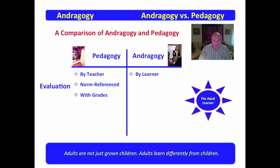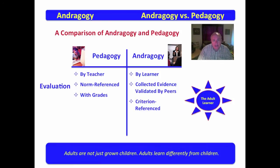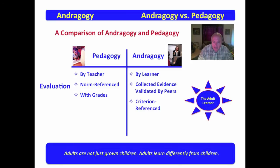In andragogy, evaluation is done by the learner, and it can be done by collected evidence validated by peers — it's about the learner and peers validating that the subject matter has been learned. Andragogy is criterion-referenced. Norm-referenced means you're judged against the group; criterion-referenced means you're judged against a criterion. You could be with a slow group and look good on norm reference, but in criterion reference you may not meet the expected level of achievement. Adults are very much about meeting the expectations of what it takes to be successful, and that is criterion-referenced.